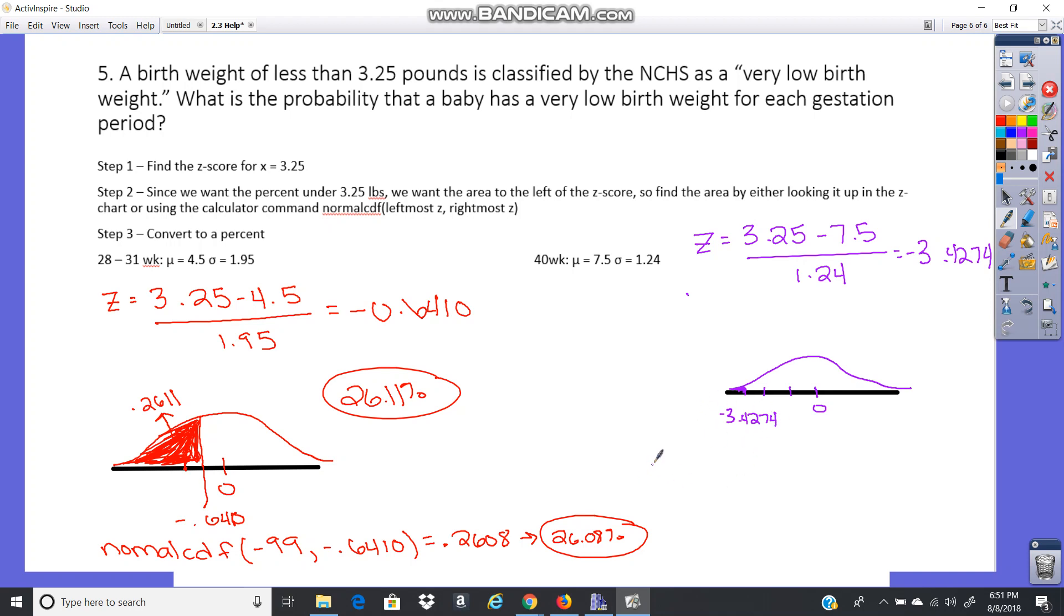Okay, so we can look it up on our z-chart or go in our calculator, normal CDF. We're still going area to the left, so still negative 99. And then our rightmost is just negative 3.4274. And we're going to get that probability there.